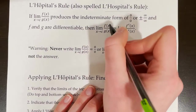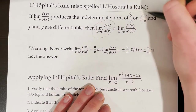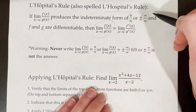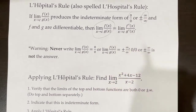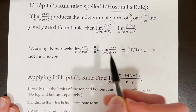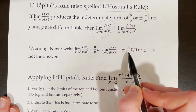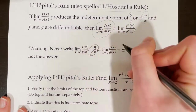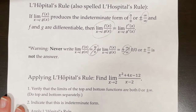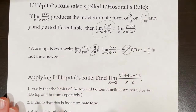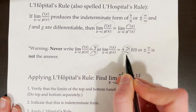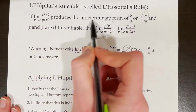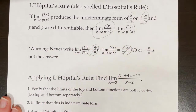So essentially, L'Hôpital's rule gives us another way to solve limits when we initially get indeterminate form — 0/0 or ±∞/∞ — and that way is with derivatives, which is why we couldn't use it in chapter 1. Make sure you never write that a limit equals 0/0 or ±∞/∞. That is not the actual answer. The correct way to say it is that it produces the indeterminate form of 0/0 or ±∞/∞.